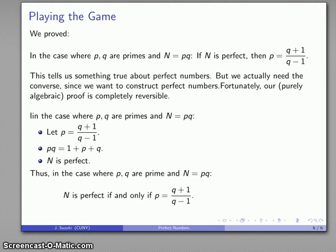I can actually join those two things together. n is perfect if and only if P has a particular relationship to Q. And now I'm ready to find perfect numbers. Or are we? We'll see. Maybe.